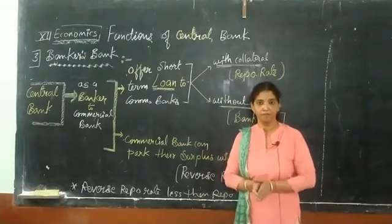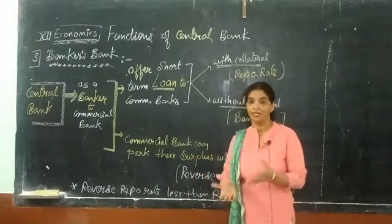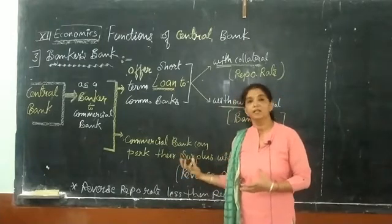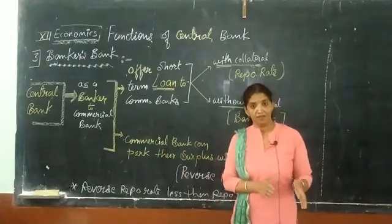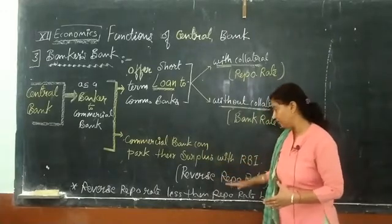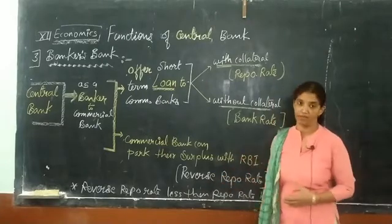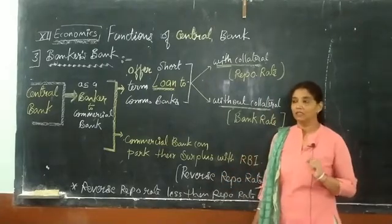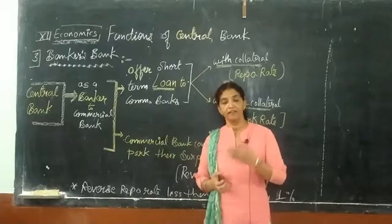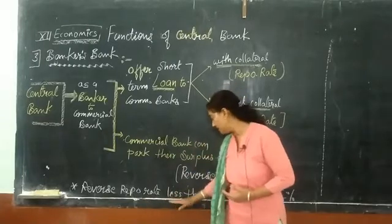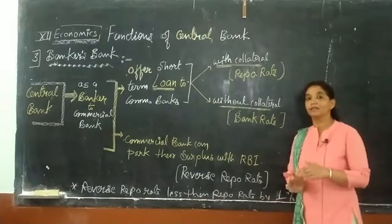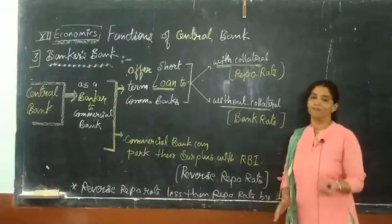The other service provided by the central bank to commercial banks is accepting their surplus deposits. Commercial banks can park their surplus funds with the central bank, and against those deposits they receive a rate of interest — this is called the reverse repo rate. One important thing to note: in standard practice, the reverse repo rate is less than the repo rate by 1%, or we can say the repo rate is greater than the reverse repo rate by 1%.